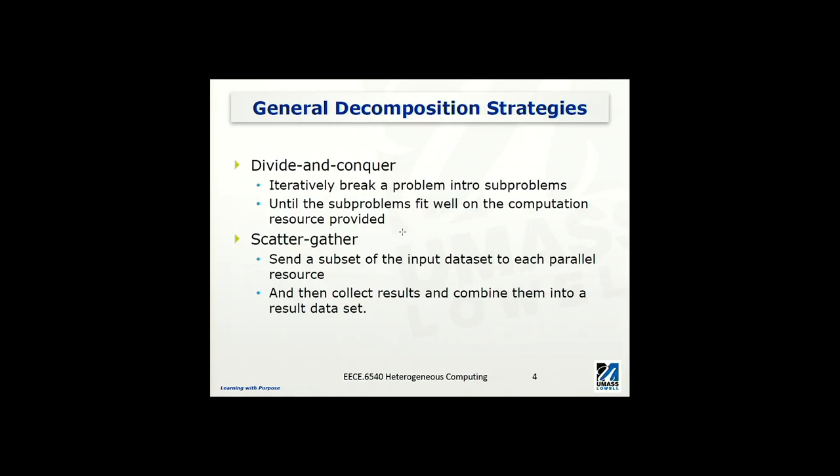Mostly we use these two strategies. One is called divide and conquer, one is called scatter and gather. And these two are also tightly connected to each other. Divide and conquer is to iteratively break a problem, really a bigger one, into smaller problems or sub-problems. And we can keep doing this to break the sub-problems into even smaller problems until the sub-problems can fit well onto the computation resources provided.